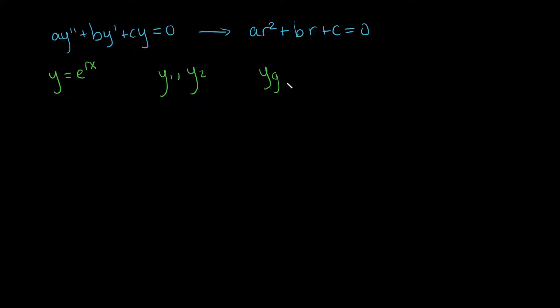Your general solution is c1 times e to the r1 times x, that first root, plus c2 times e to the r2 times x. And if r is a single root, then r1 and r2 are the same, so you want to multiply this in by an x. But the purpose of this video, after this little review of what we've done, is to note the case in which we have the complex roots.